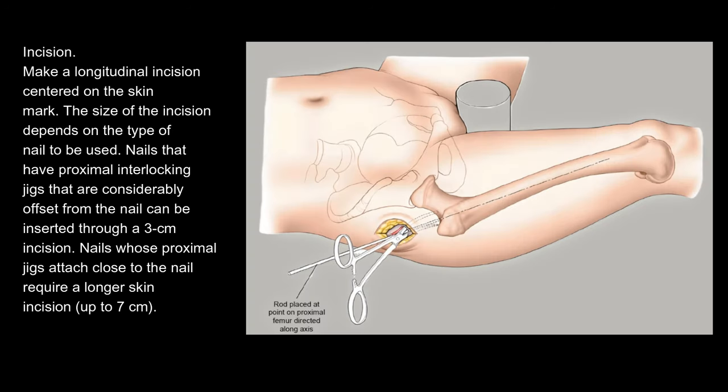Make a longitudinal incision centered on the skin mark. The size of the incision depends on the type of nail to be used. Nails that have proximal interlocking jigs that are considerably offset from the nail can be inserted through a 3 cm incision. Nails whose proximal jigs attach close to the nail require a longer skin incision, up to 7 cm.